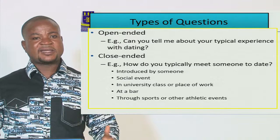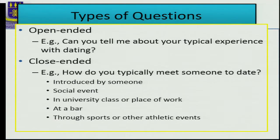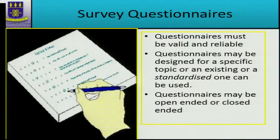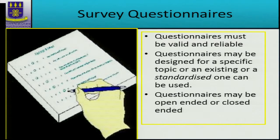The questions we ask in surveys are of two types: open-ended and close-ended. Open-ended questions ask participants to write their own experiences — for example, 'Can you tell me about your typical experience when you were dating?' They are free to write whatever they want. In close-ended questions, you give them options and they select — for example, 'Do you think abortion should be legalized? Yes or No.' Survey questionnaires must be valid, reliable, and constructed by experts.